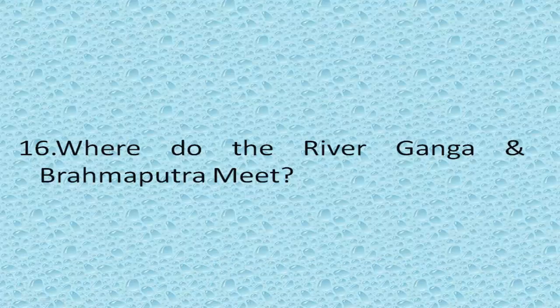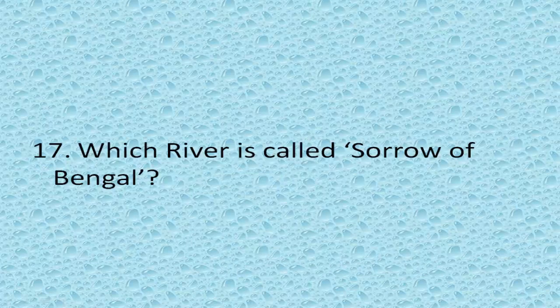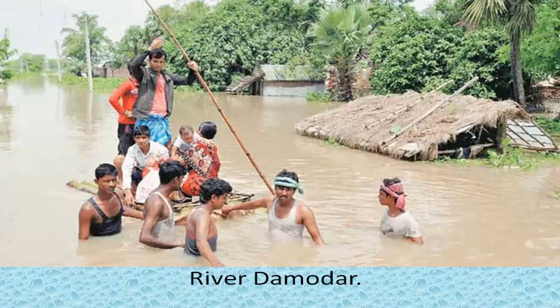Where do the rivers Ganga and Brahmaputra meet? Sundarbans. Which river is called the Sorrow of Bengal? River Damodar, because it gets flooded often causing havoc.